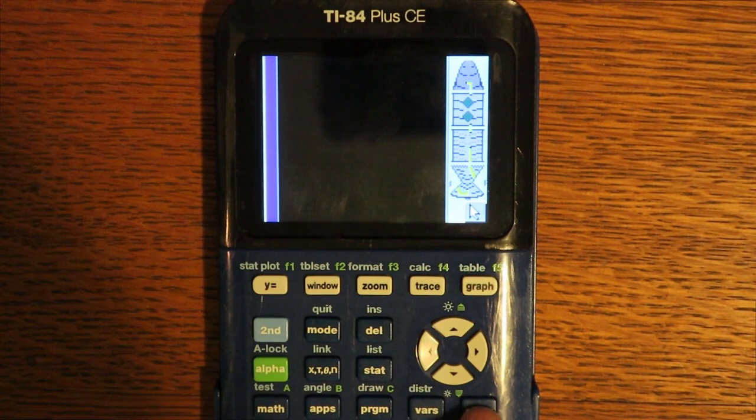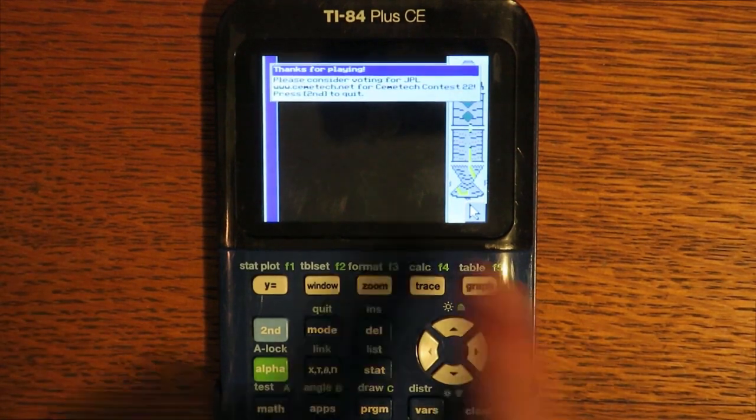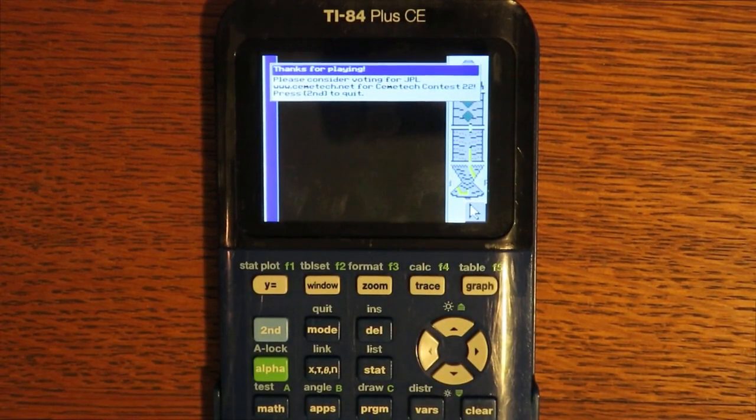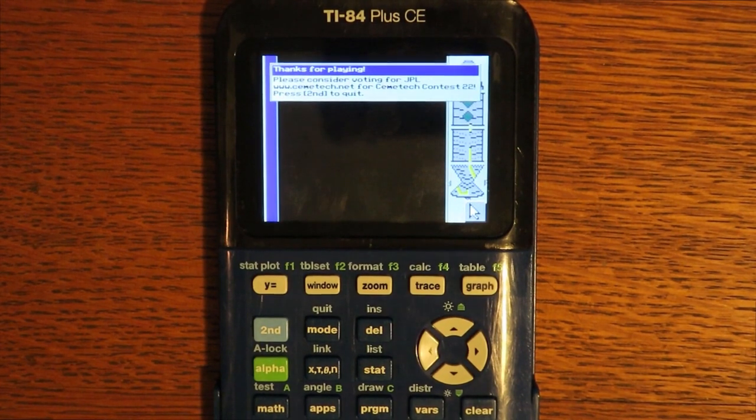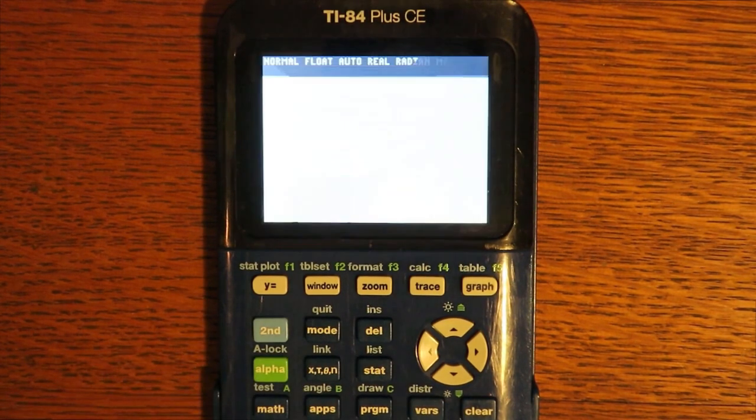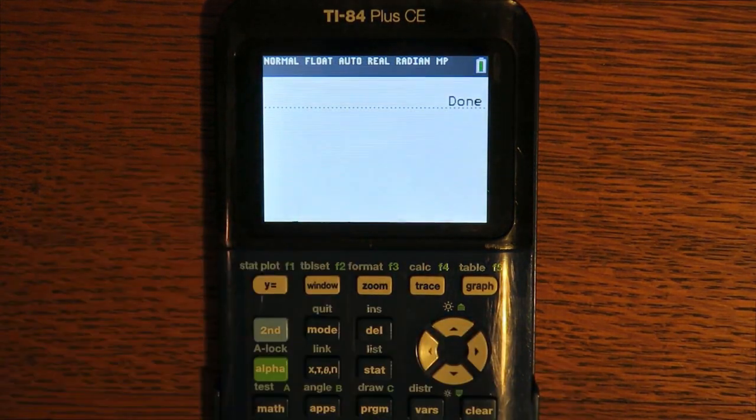To exit this program, simply press clear. This will thank you for playing and ask you to please vote for this for KemiTech contest 22. Press second to fully quit. It will fade out and go back to your home screen.